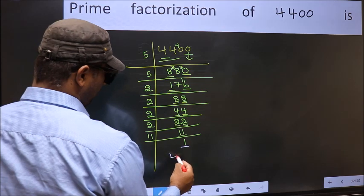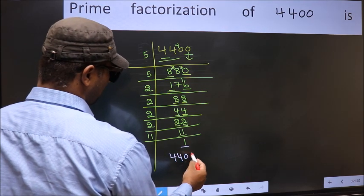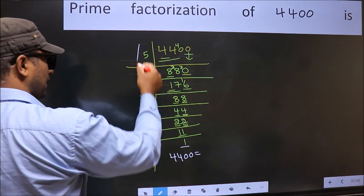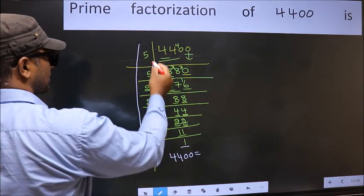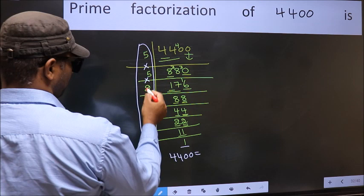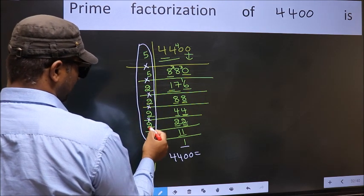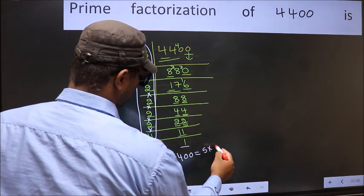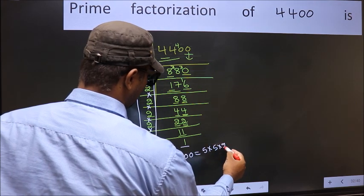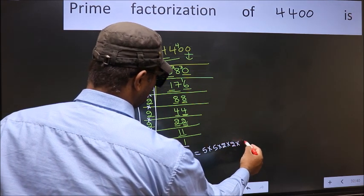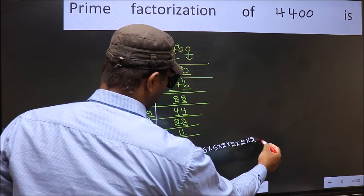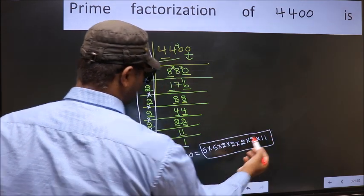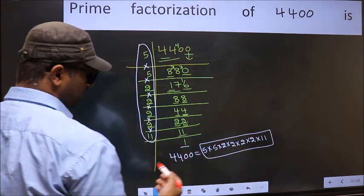So the prime factorization of 4400 is the product of these numbers: 5 × 5 × 2 × 2 × 2 × 2 × 11. This is the prime factorization of 4400.